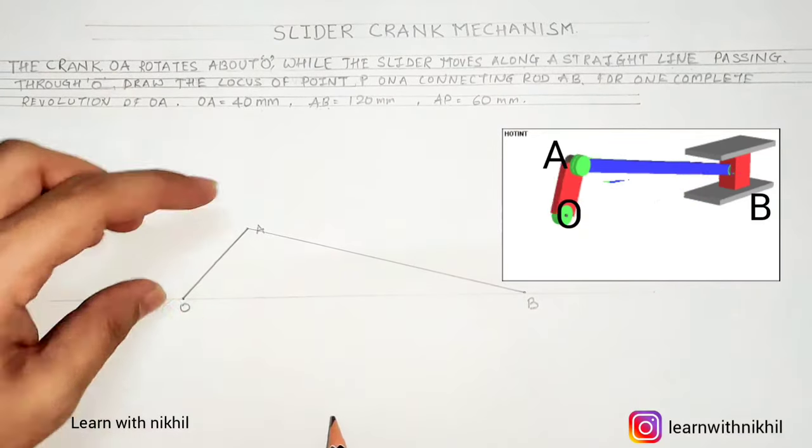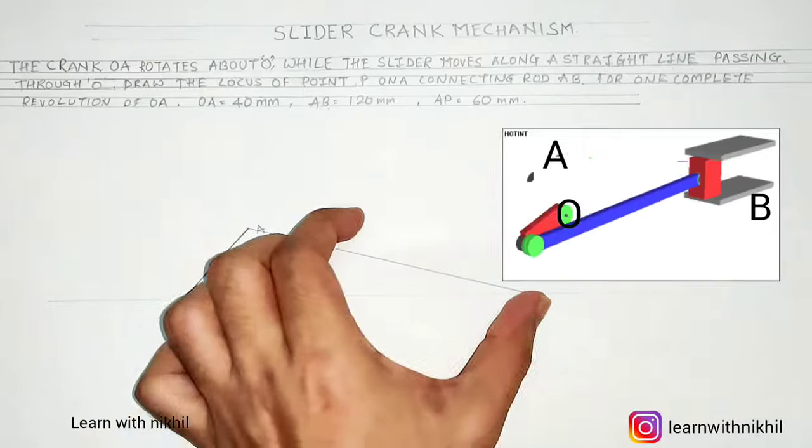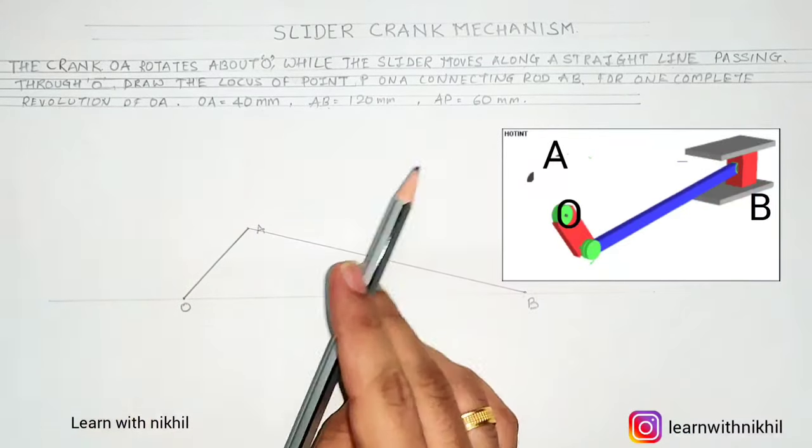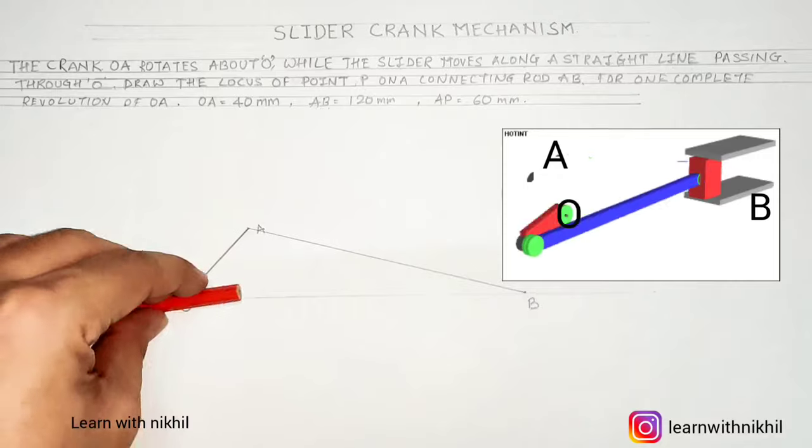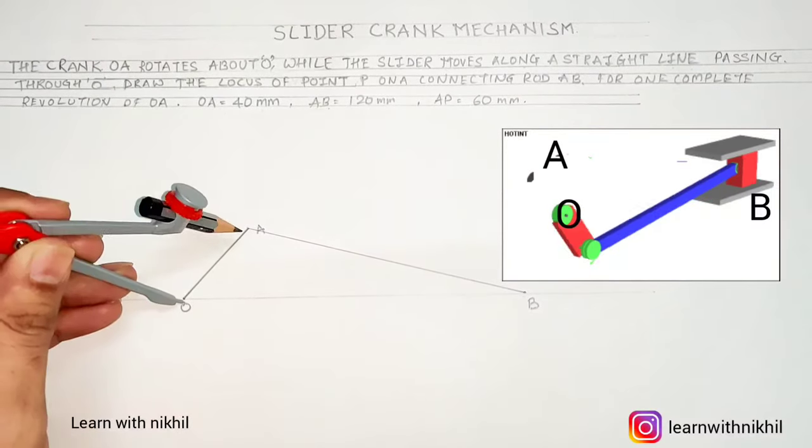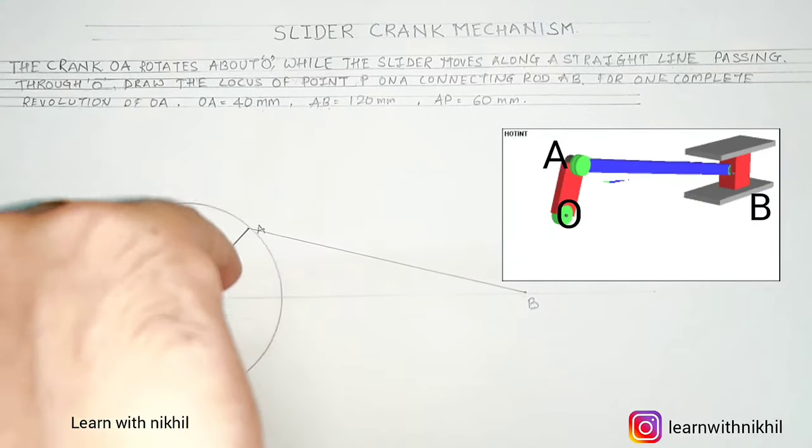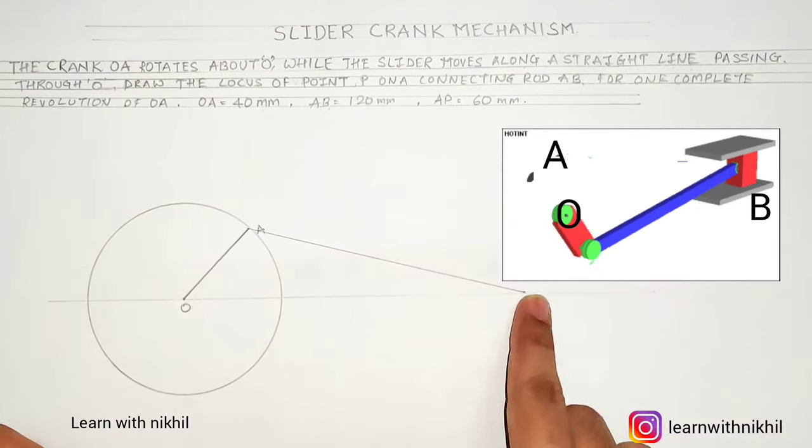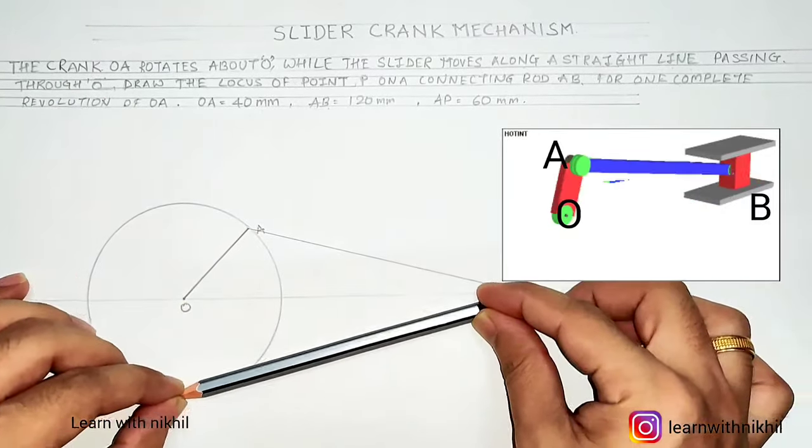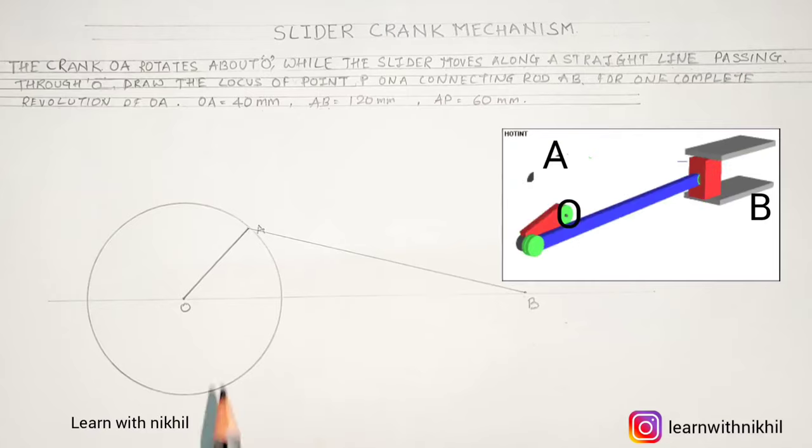B is a slider which moves horizontally. AB is 120 mm, so the locus of A is nothing but a circle as it is moving in a circular motion. So we will draw the locus of A as a circle.